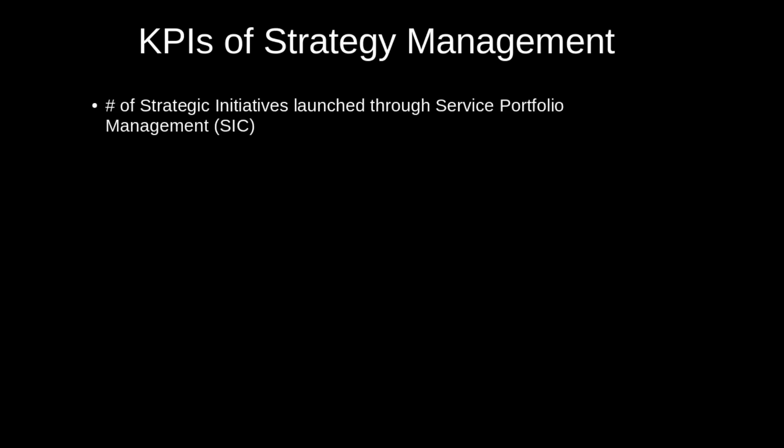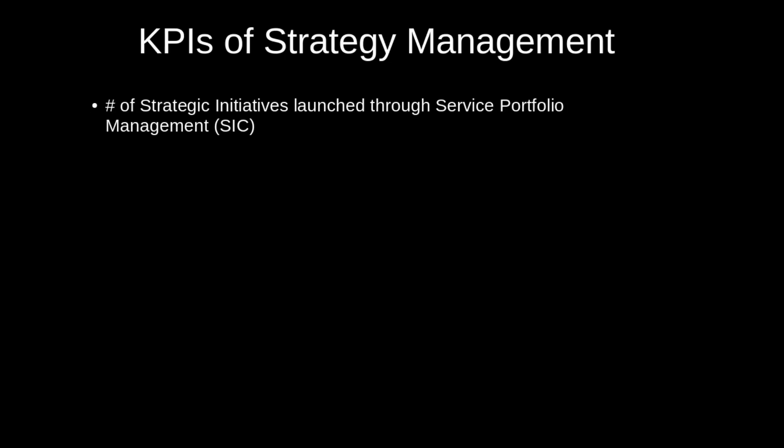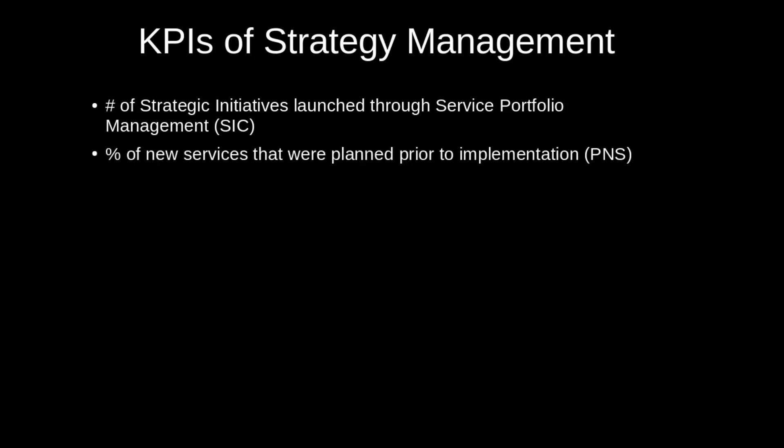Now let's discuss what we'll be measuring. The SIC is the number of strategic initiatives launched through the service portfolio management process. Each delivery cycle, we measure the number of services released that have a strategic plan attached. We take a percentage — the number of new services with a plan divided by the total number of new services. This is the PNS, a constrained percentage between zero and one.